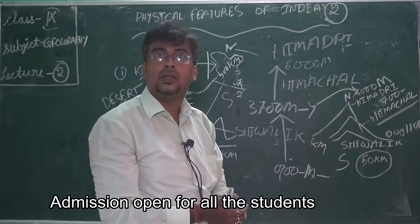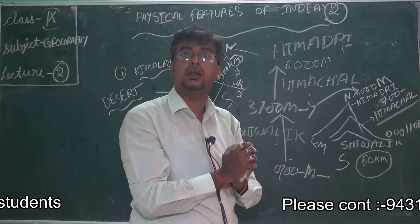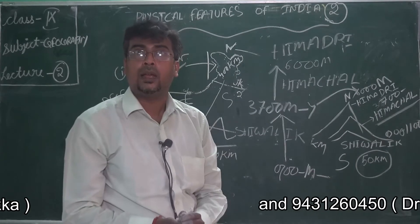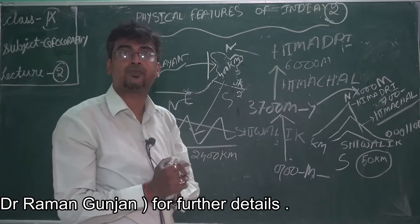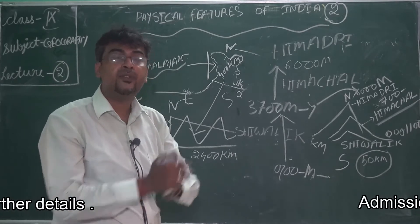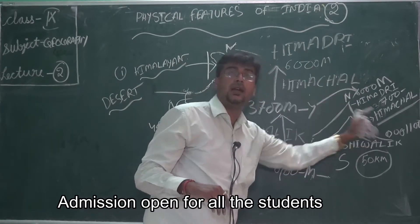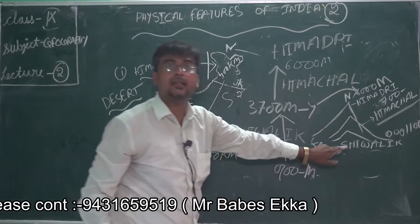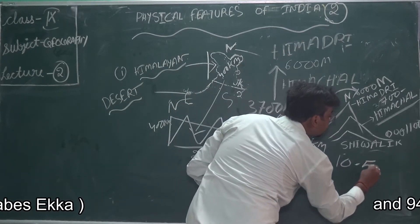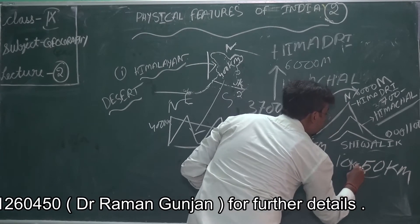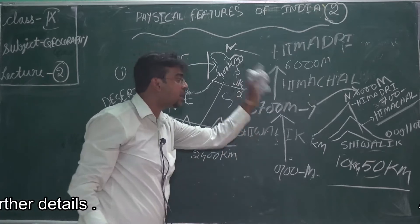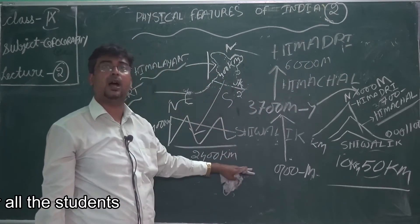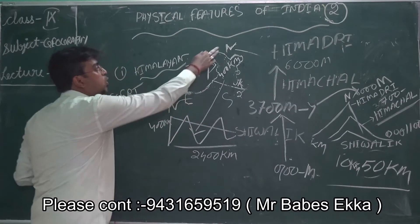If the question becomes 'classify the Himalayas according to north to south,' these three classifications are the answer. Very important — the Himachal Himalayas is famous for tourist places; different types of hill stations and tourist places are available here. The Shivalik area is 10 to 50 kilometers wide. So the question will become 'classify the Himalayas north to south' — you write Himadri, Himachal, and Shivalik.